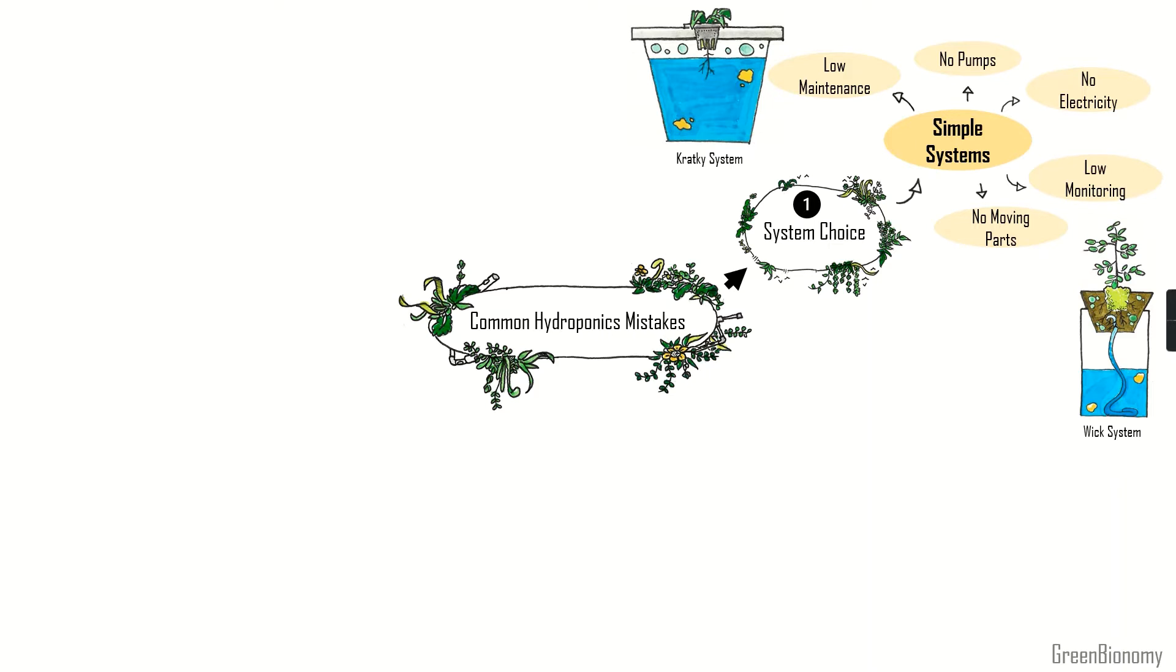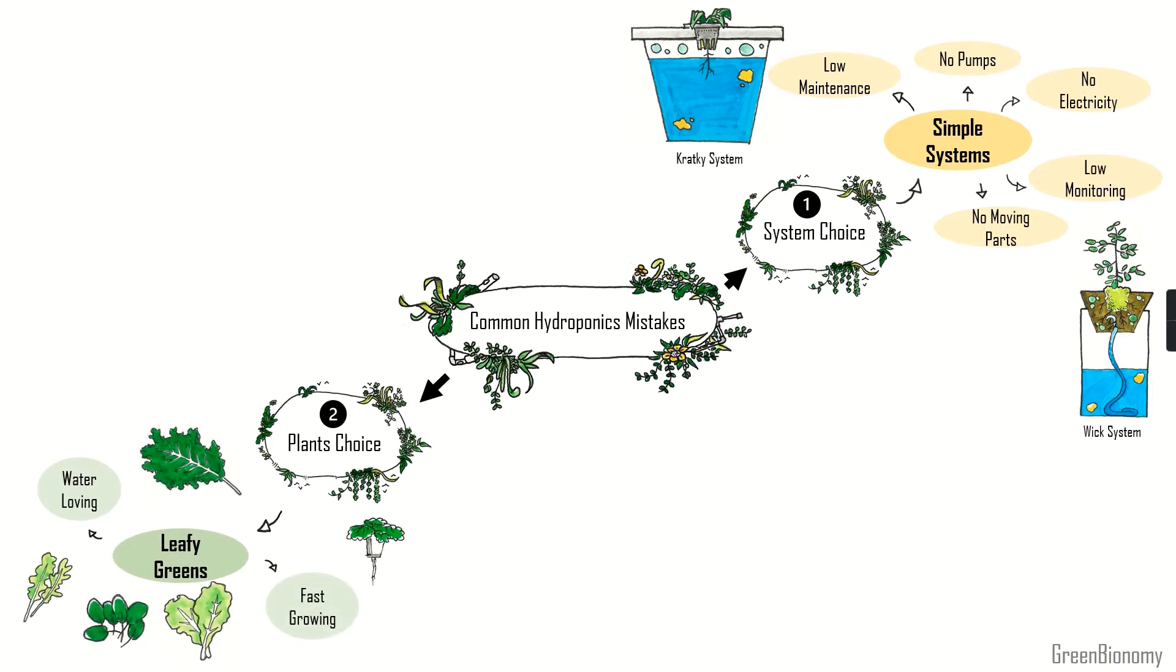The second mistake involves the plants you choose to grow. Plants that work well with hydroponics are water-loving, fast-growing leafy greens. Growing a tomato plant is possible, same for a cucumber, but it will be harder and will require more adjustments in nutrients levels and pH and other parameters. It basically has a more complex growth than a lettuce head.